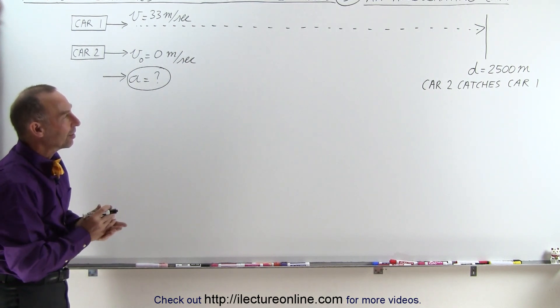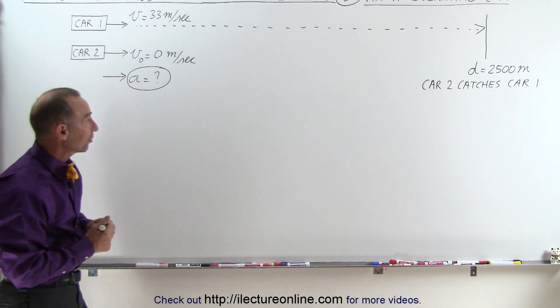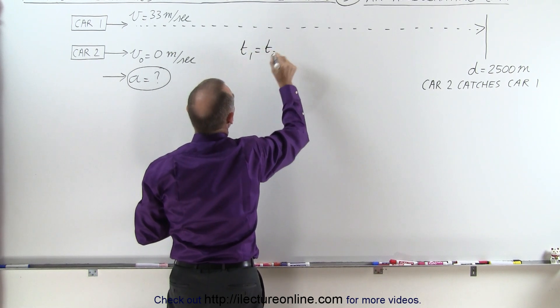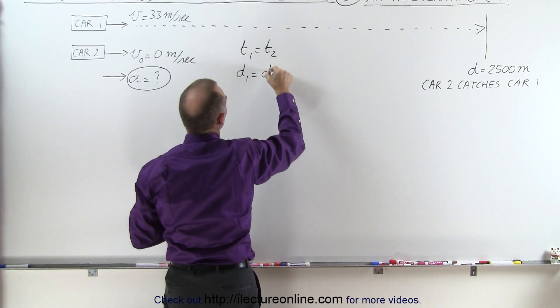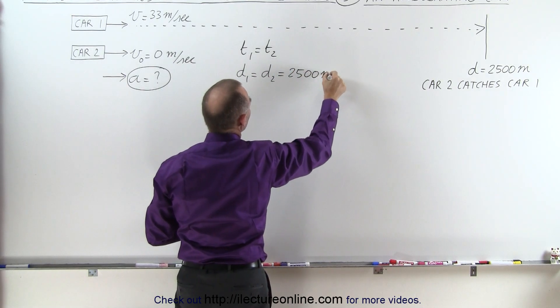So what we can say in this case is that the time spent for the first car and the time spent for the second car is the same. So t₁ is equal to t₂, and we can also say that distance covered by the first car must equal distance covered by the second car, which in this case is going to be 2,500 meters.